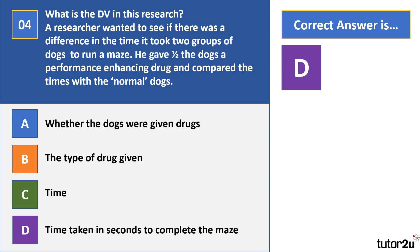You might have spotted that A and B are just variations of the independent variable, and arguably neither of those is correctly operationalised either.